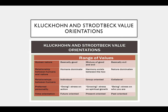Kluckhohn and Strodtbeck identified five problems or orientations. First, what is human nature — are people basically good, a mix of good and evil, or basically evil? Second, what is the relationship between humans and nature — do humans dominate, does harmony exist, or does nature dominate? Third, what is the relationship between humans — individual, group-orientated, or collateral? Fourth, what is the preferred personality — doing, growing, or being? And fifth, what is the time orientation — future, present, or past?